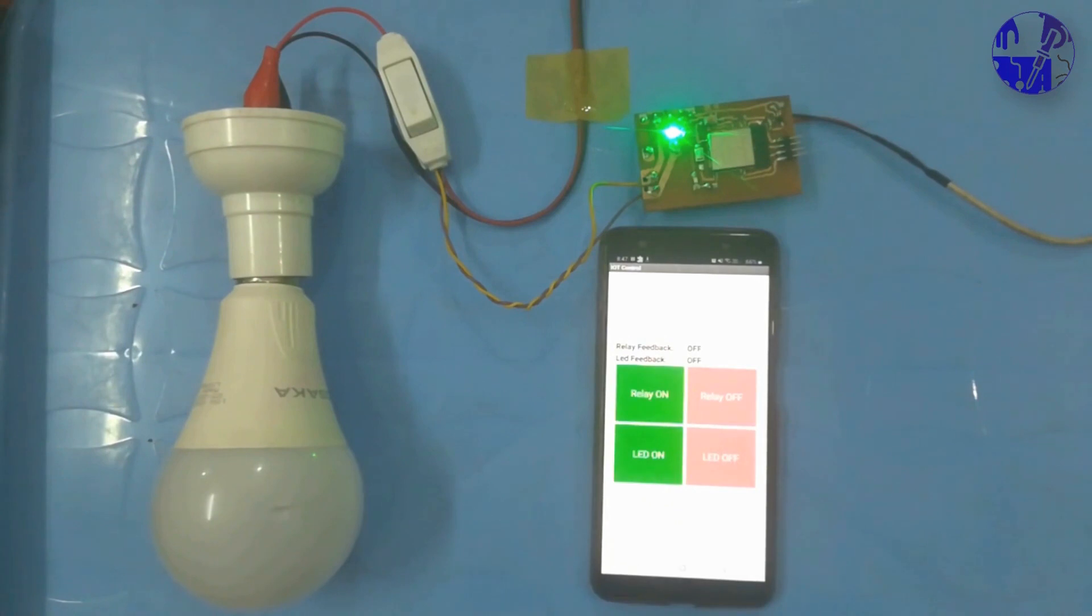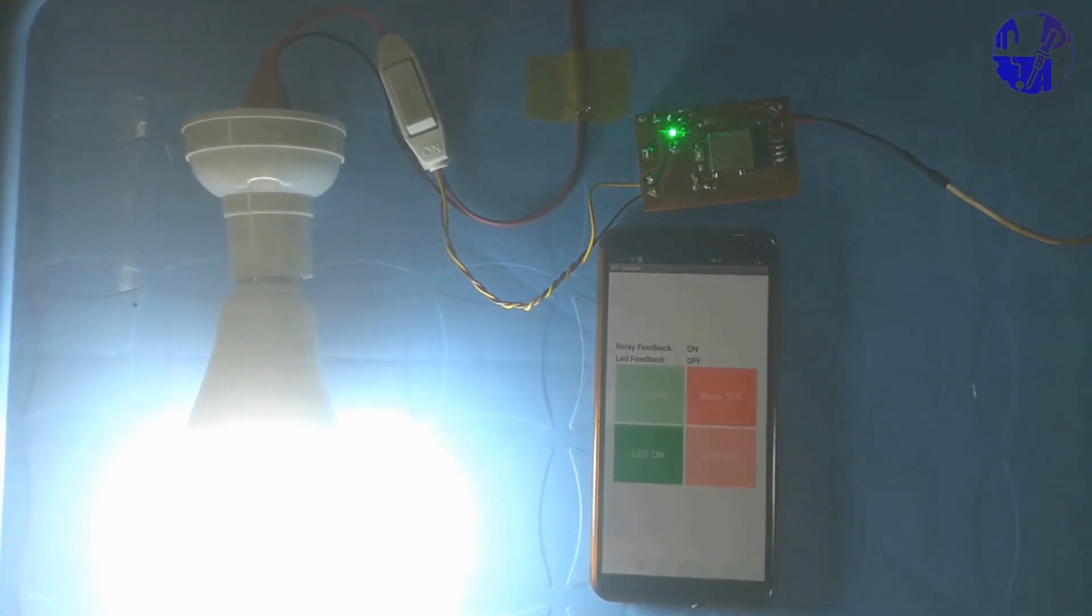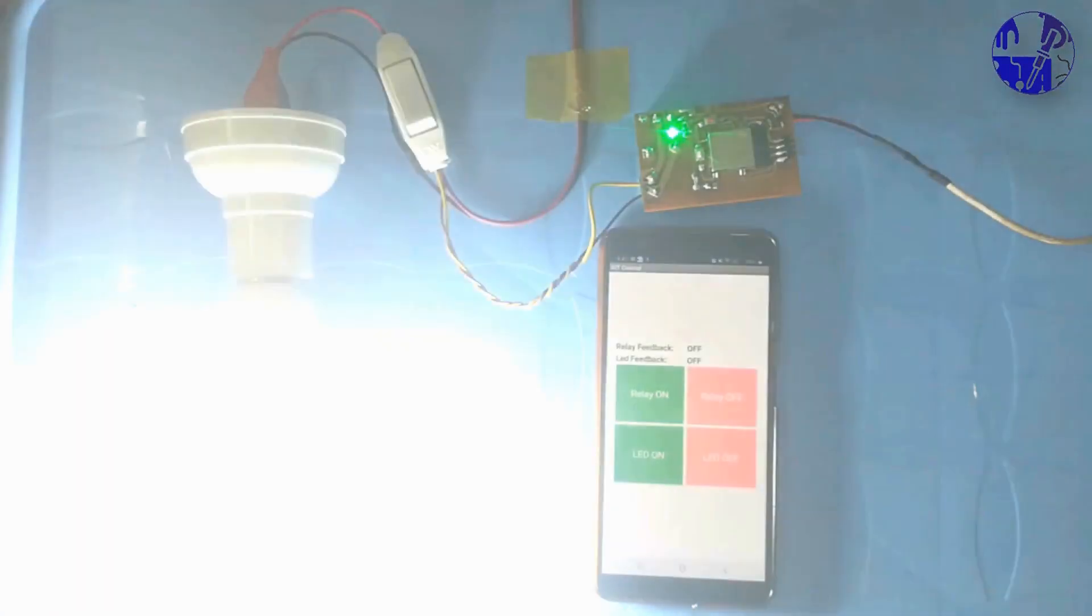The feedback mechanism is a crucial feature in this project. It confirms whether the device we are operating remotely is actually working or not. For instance, if we want to turn on a switch, we press a button on the Android app and wait for the feedback to confirm the operation.